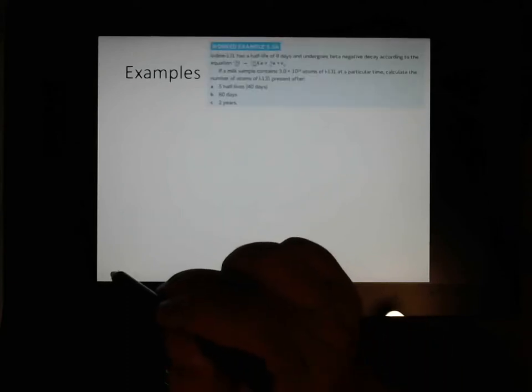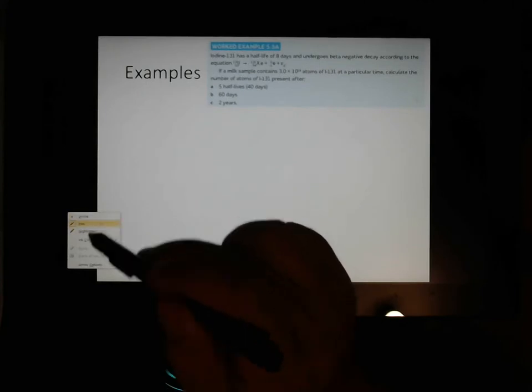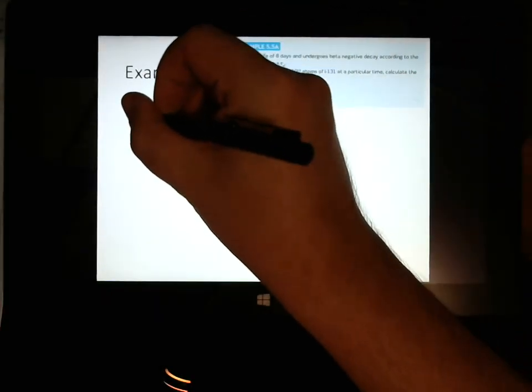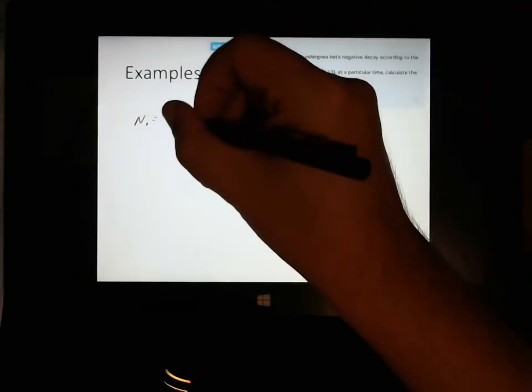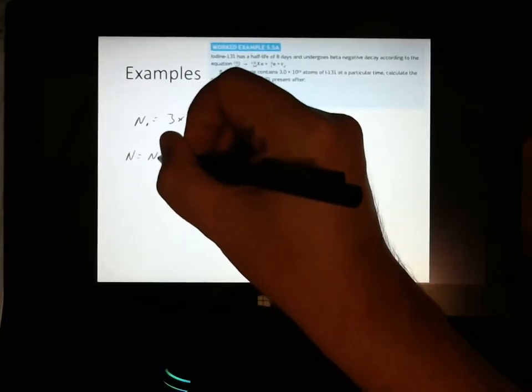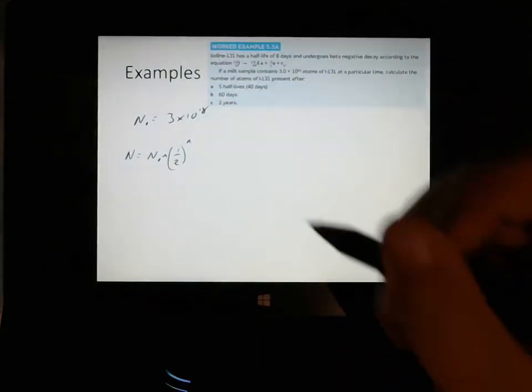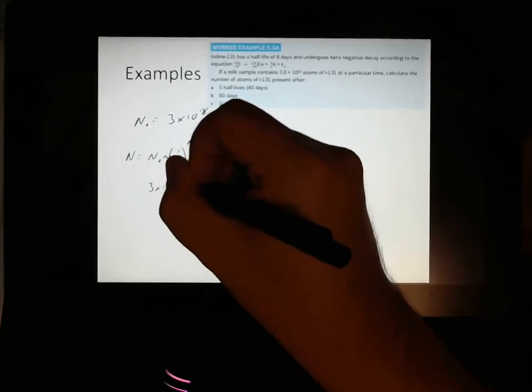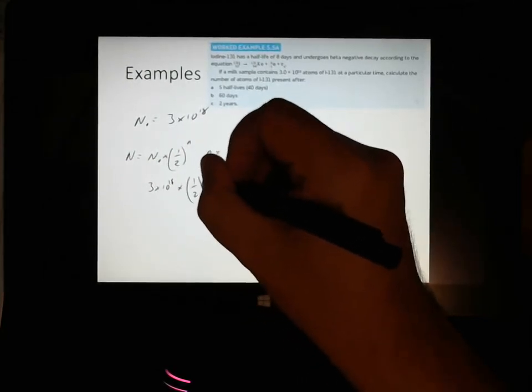Let's have a look at a couple of examples in the text here. So, first one here has iodine-131, there's a half-life of 8 days, and undergoes beta-negative decay according to the equation above. If a milk sample contains 3 times 10 to the 18 atoms at a particular time, calculate the number of atoms present after. Let's have a look at this. We know that n-naught is equal to 3 times 10 to the 18. By the half-life equation, then we know that n will equal n-naught times a half to the power of n. So this first one, 5 half-lives, well, n is going to equal to 5.